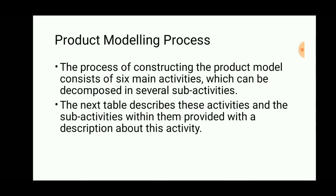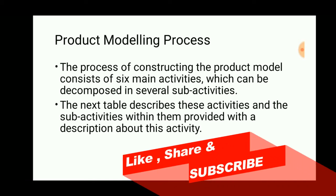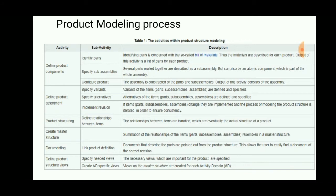The process of constructing a product model consists of six main activities, which can be decomposed into several subcategories. The first activity is product components, which involves identifying the parts required, how the parts are assembled, and how the product is configured and serviced. The second is product assortment — identifying variants and alternatives. For example, if a metal material is too strong, the alternative might be composite or plastic. The third activity is implementing revisions.